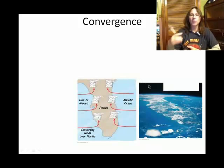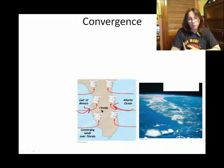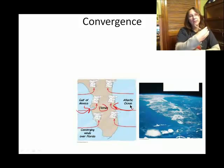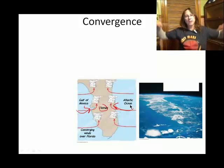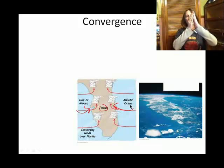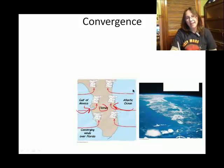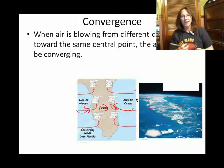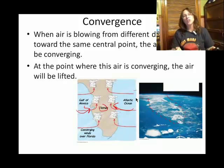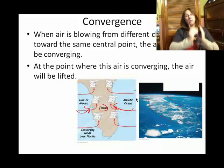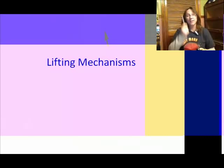Convergence is shown here where surface winds come from two different directions. This is Florida — we have winds coming off the Atlantic Ocean and winds coming off the Gulf of Mexico. Those winds meet, converge, and force each other to go up vertically. This image of Florida shows all the little clouds that result. Convergence is another lifting mechanism to get air ascending vertically.